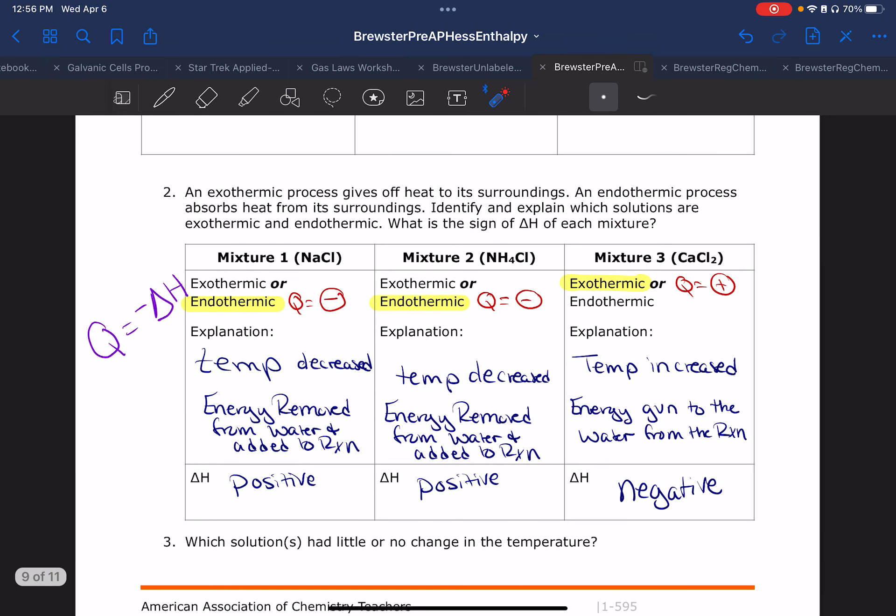So going back to our previous lab, we mentioned that Q is equal to negative delta H. And so if we recall that and we think about that, when I have an endothermic process, my Q is negative. So a negative times negative makes a positive, which is why the delta H here for these two is going to be positive. And then my Q for calcium chloride, when I calculate it, since my temperature change is positive, my Q will be positive. Thus, my delta H will be negative.